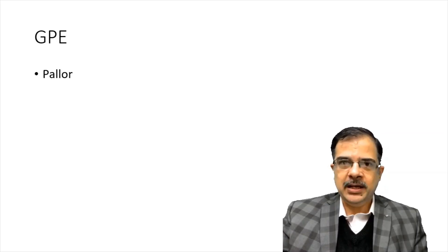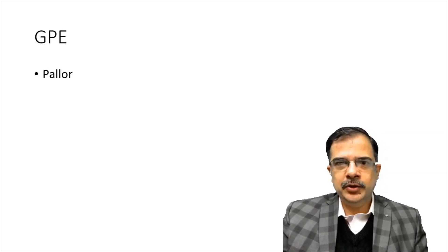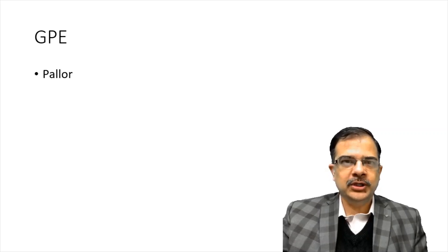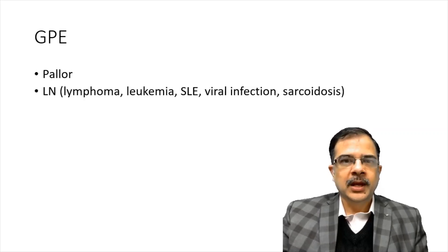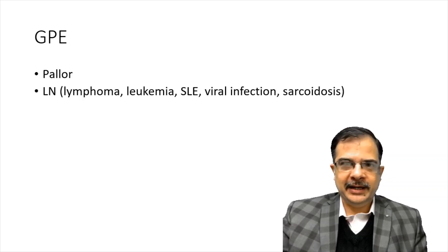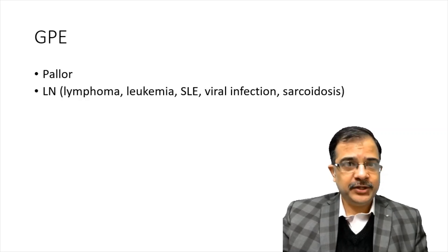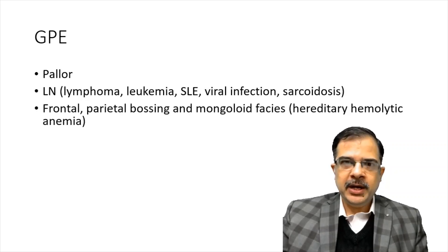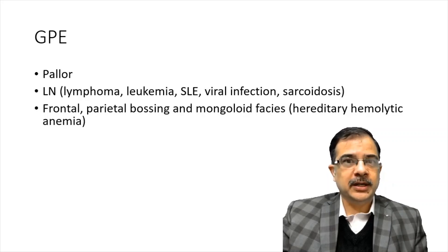On general physical examination, the important points we look for are pallor — anemia, lymphoma, and leukemia can cause anemia so pallor will be looked for. Lymph nodes will be present in cases of lymphoma, leukemia, connective tissue disorders like SLE. It can also be a viral infection like infectious mononucleosis or sarcoidosis.